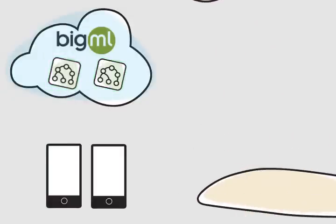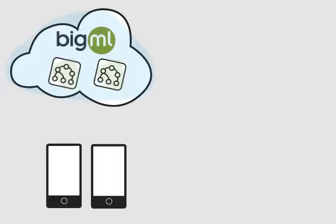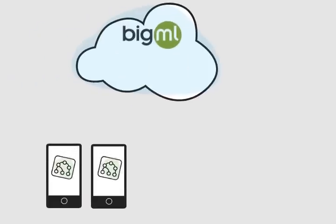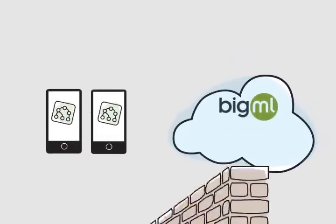And because BigML's predictive models are fully white boxed and downloadable it doesn't matter if Sara's application has a connection to the internet or not. The models can always be retrieved from BigML and used to make predictions offline anytime on any device.